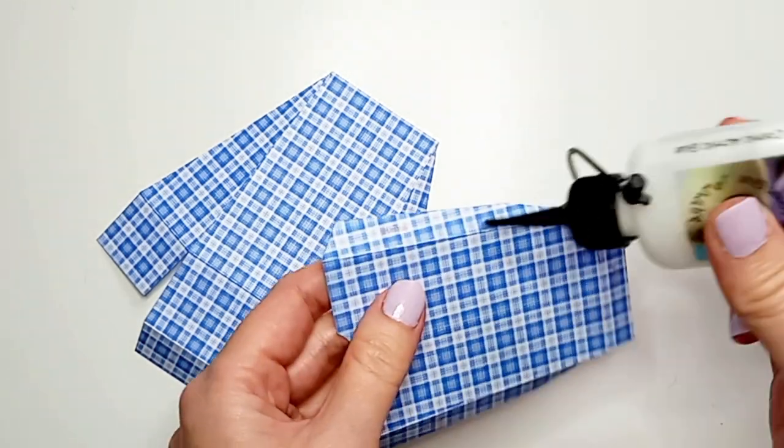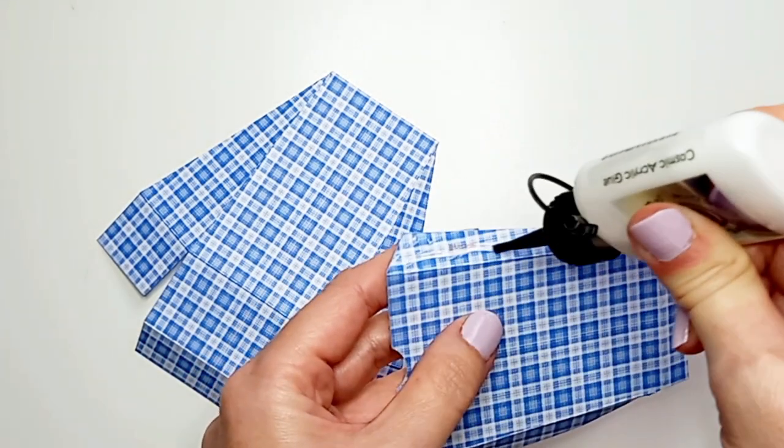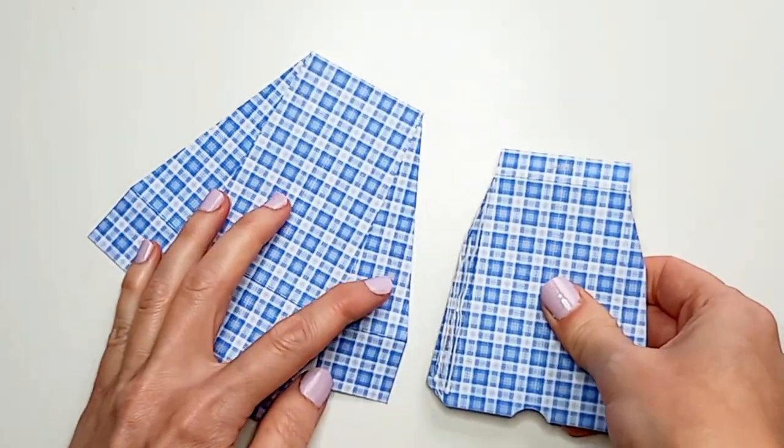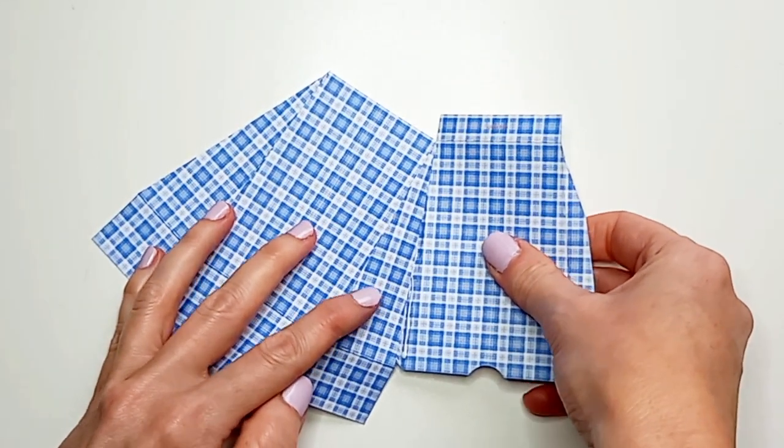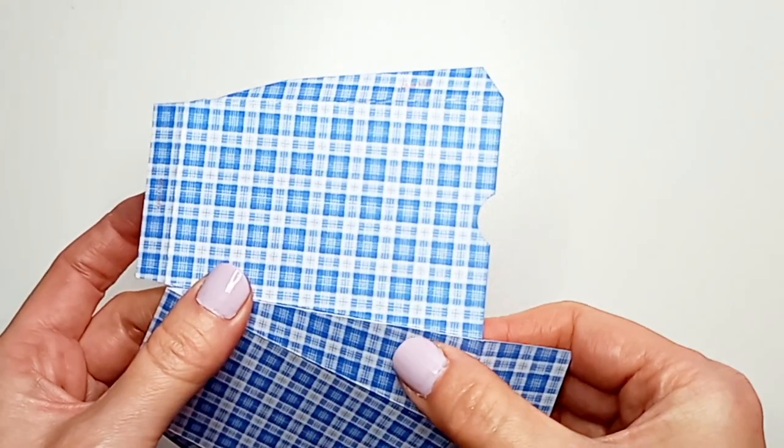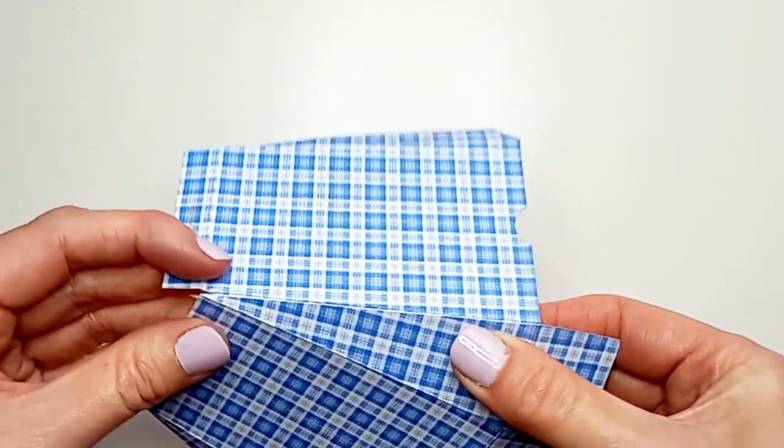So next you need to apply some glue to one of the long side tabs and attach it to the other piece like this. Just making sure that it's all lined up along that score line.